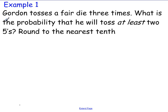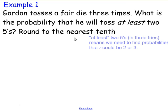Example 1. Gordon tosses a fair die 3 times. What is the probability that he will toss at least 2 fives? Round to the nearest tenth. So now we're getting into our aim for the day. How do you solve probability problems that involve the words at least? So when it says at least 2 fives, at least 2 fives in 3 tries means we need to find probabilities that R could be 2 or 3.